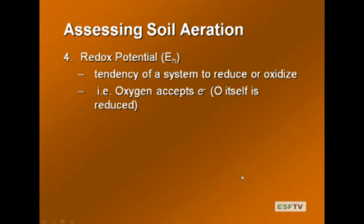A fourth assessment measure is redox potential, EH — the tendency of a system to reduce or oxidize, measured in volts. Reduction is the gain of electrons; oxidation is the loss of electrons. Oxygen accepts electrons (it is reduced), while the other substance — usually iron — is oxidized. So oxygen is an oxidizing agent: when iron gives electrons to oxygen, oxygen is reduced and iron is oxidized.